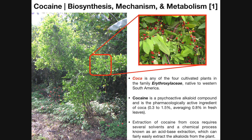Coca plants naturally biosynthesize cocaine. If we zoom in, we can take a look at the leaves and the berries — it's actually the leaves that contain the cocaine; the berries don't really contain that. The leaves contain anywhere between 0.3% to 1.5% cocaine by mass, averaging about 0.8% cocaine by mass, meaning that per every 100 grams of leaves they would contain about 0.8 grams of cocaine.